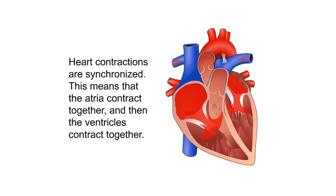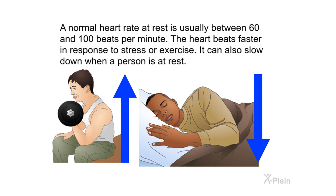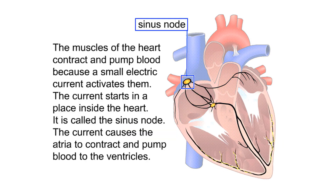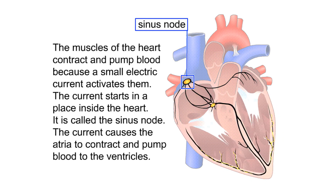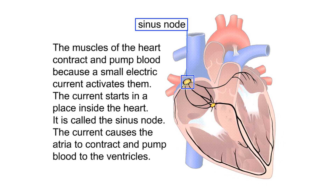Heart contractions are synchronized — the atria contract together, then the ventricles contract together. A normal heart rate at rest is usually between 60 and 100 beats per minute. The heart beats faster in response to stress or exercise and slows down when a person is at rest. The muscles of the heart contract because a small electric current activates them. This current starts in a place called the sinus node, which causes the atria to contract and pump blood to the ventricles.